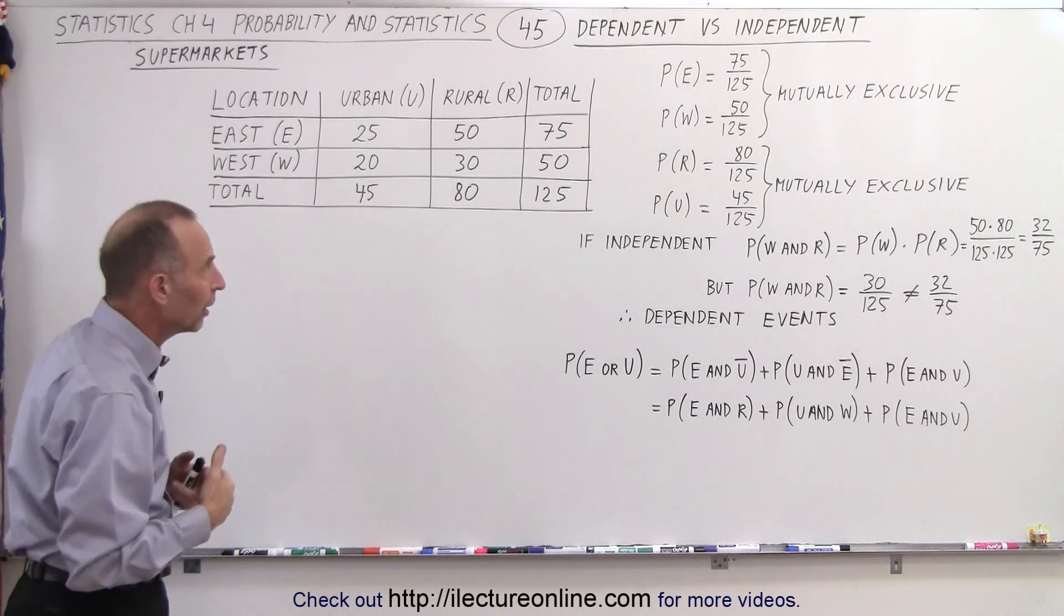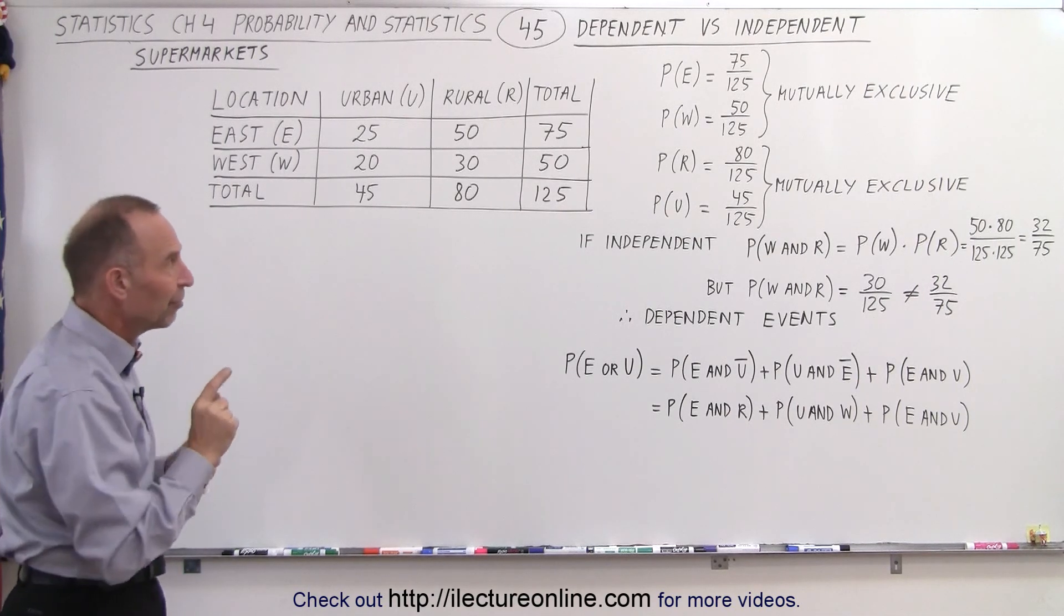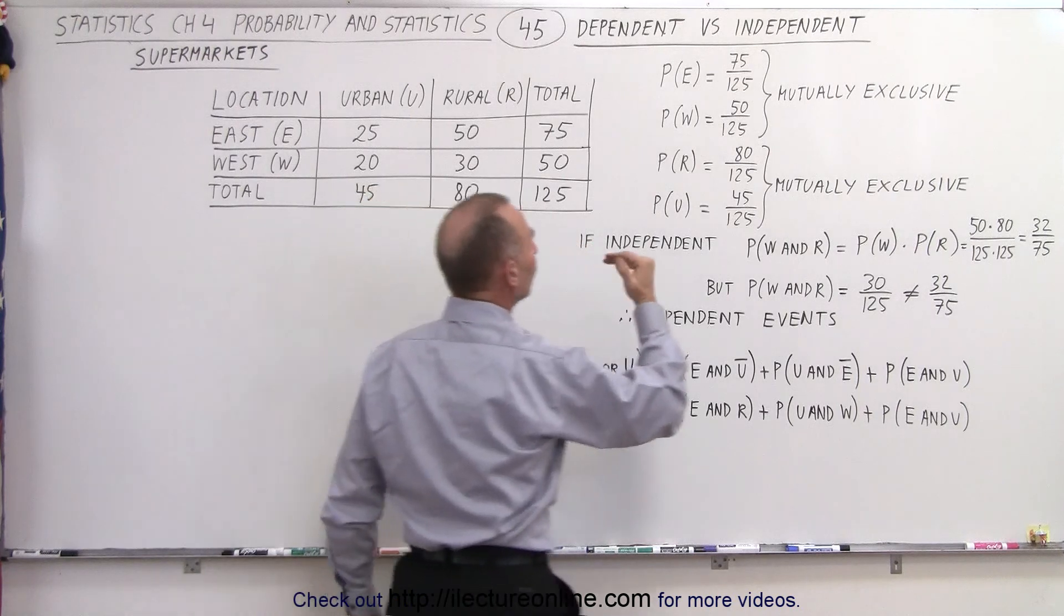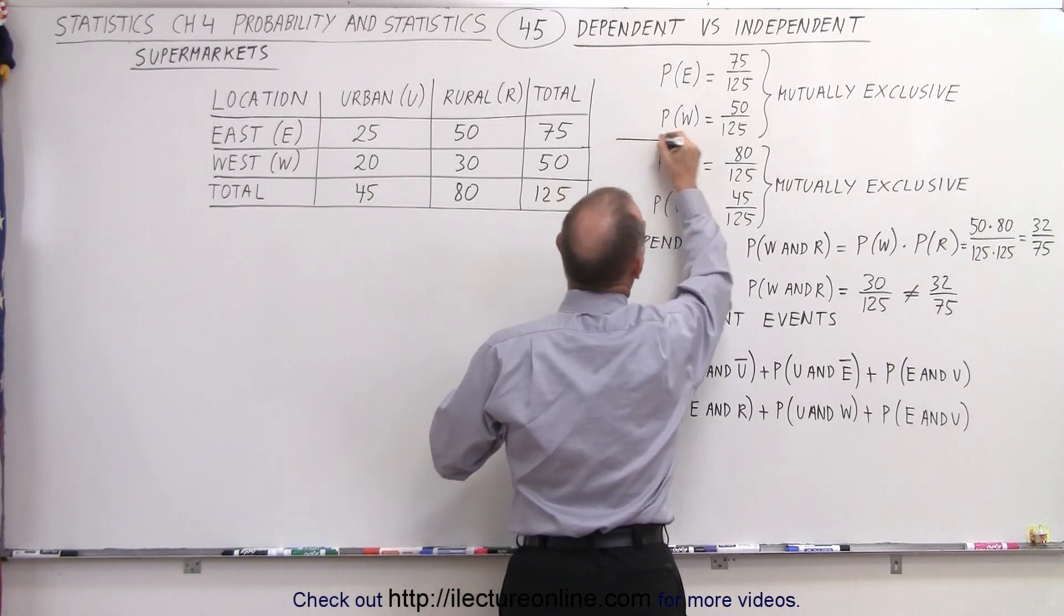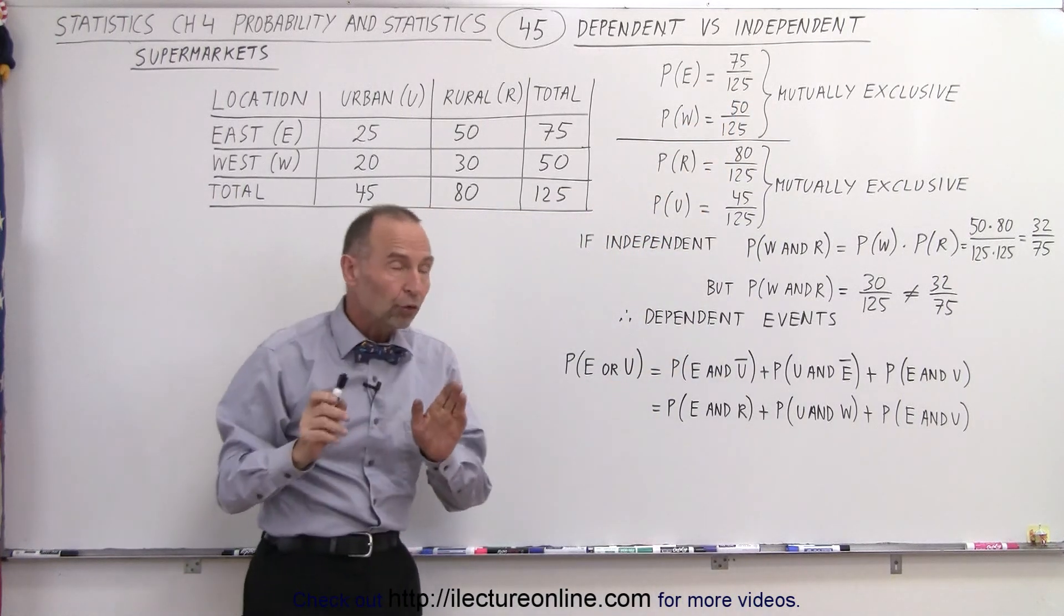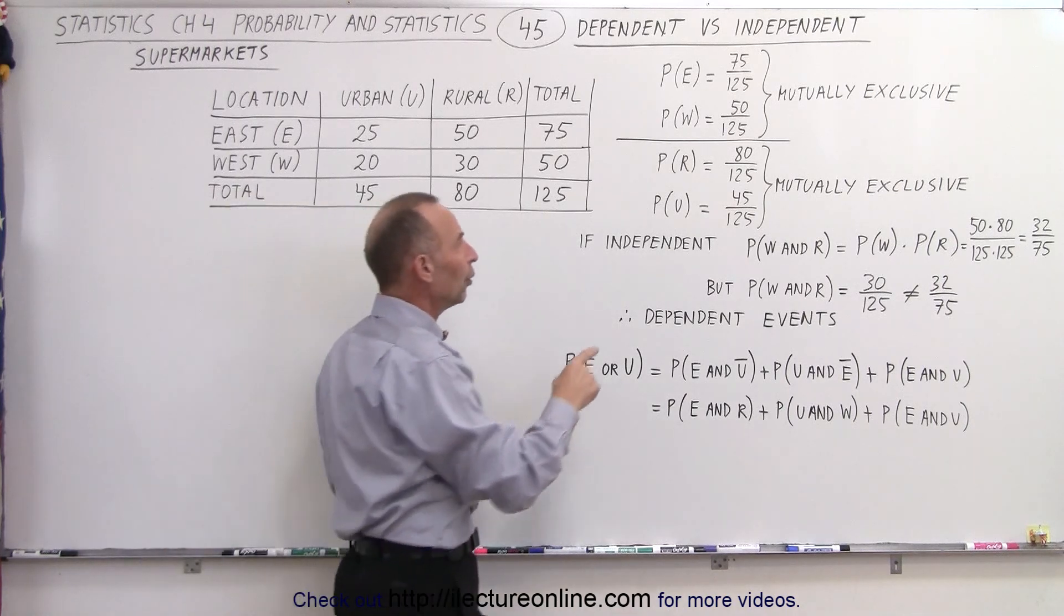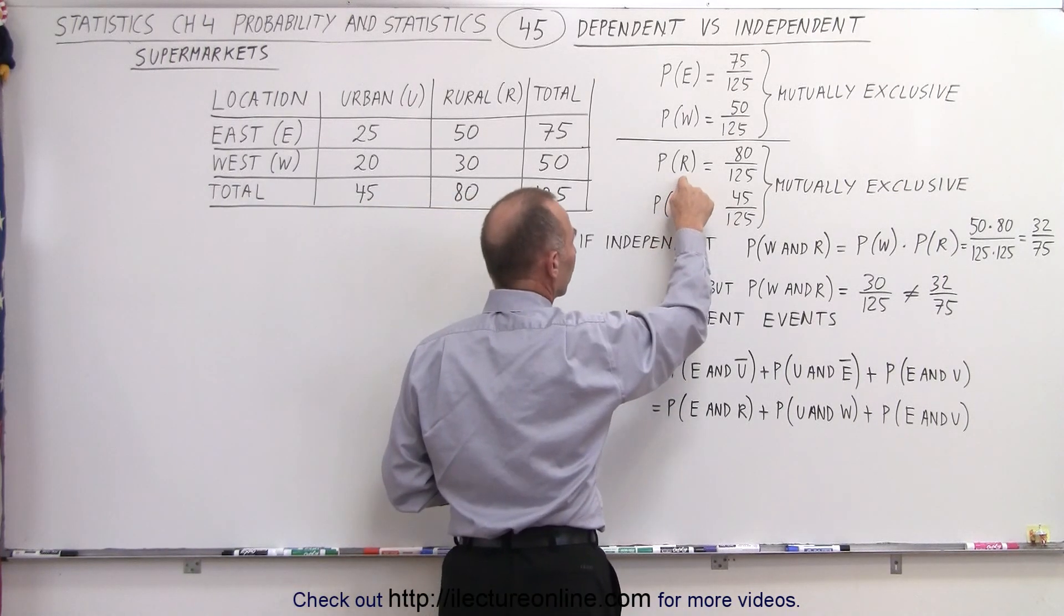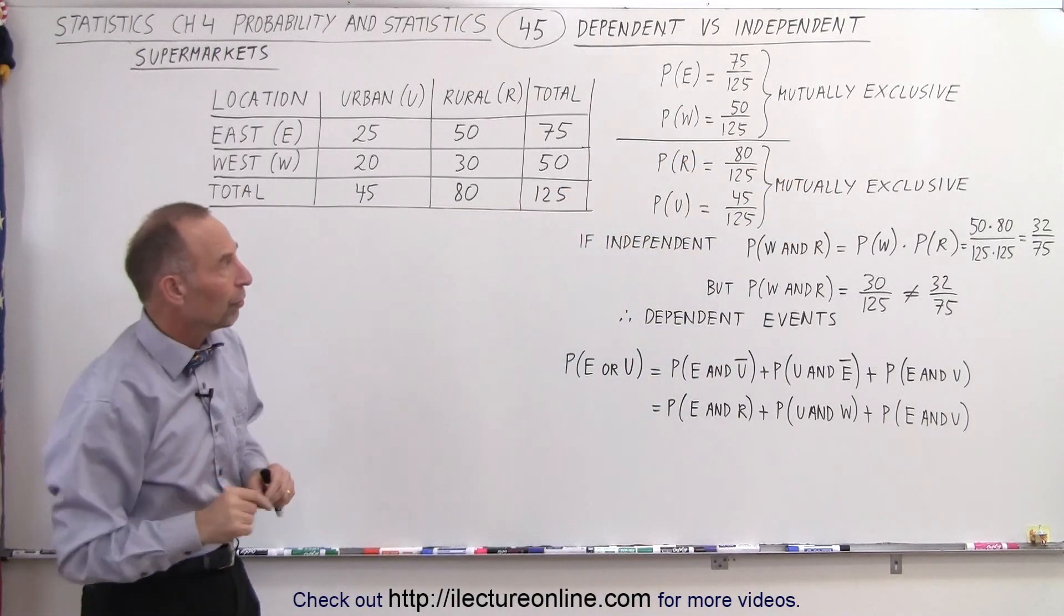So there's some sort of what we would call a non-exclusivity there. However if we separate the two probabilities, for example if we only look at the probability of being in the east or the probability of being in the west, those are what we call mutually exclusive events. And if we only consider that they're either rural or urban, again those two together would be considered mutually exclusive.